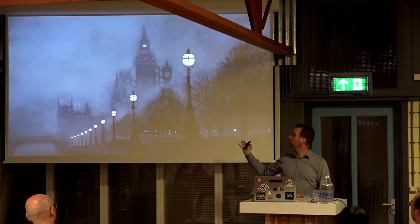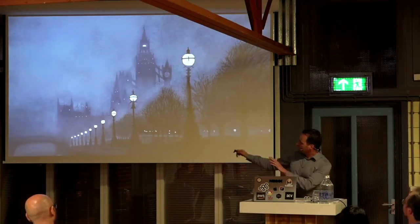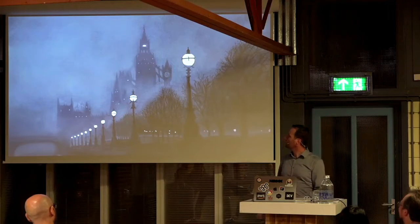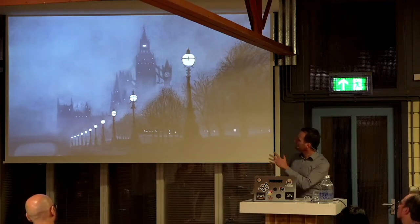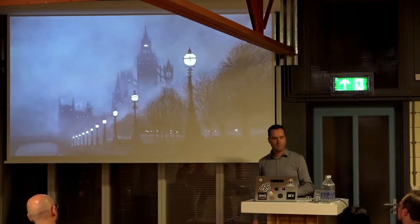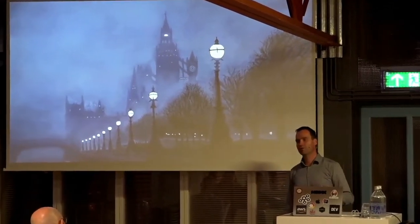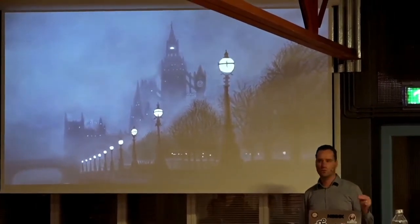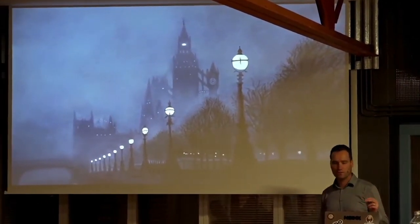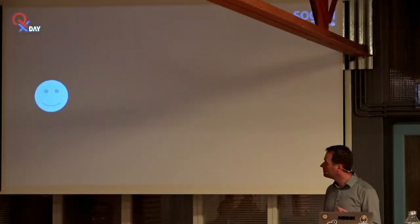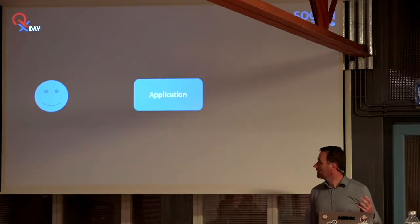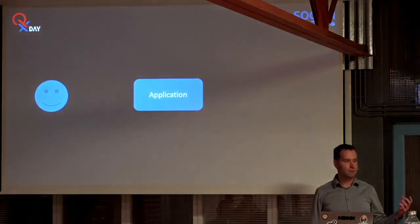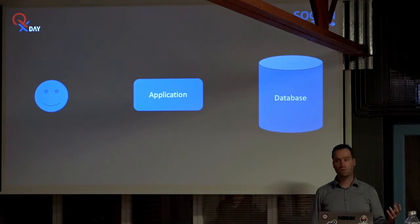Imagine London in the fog. You see some outlines of things in the distance, you can barely make out the time. And probably this is what your production environment looks like — you see some things, but many things are also hidden. So why is this important? Imagine a user who uses an application, and that application uses a database. Very common scenario. Very simple.